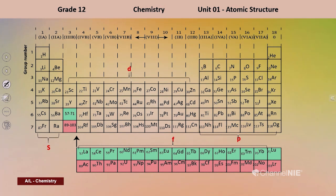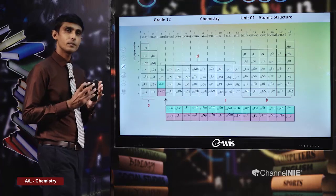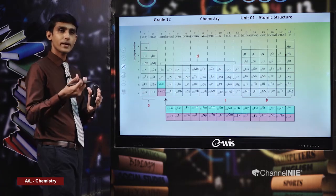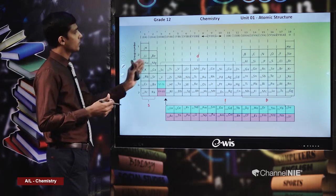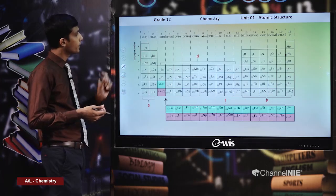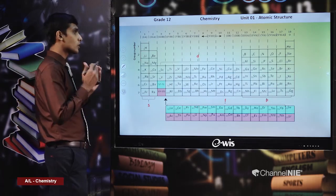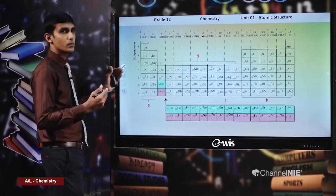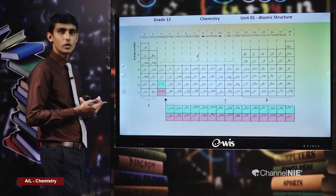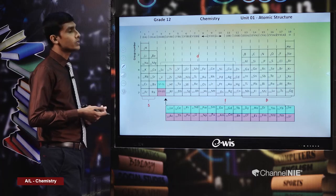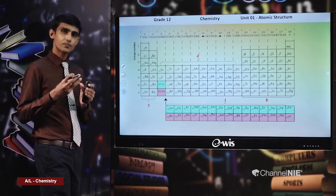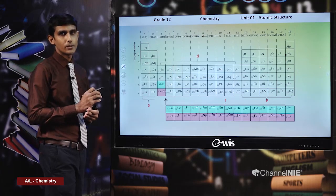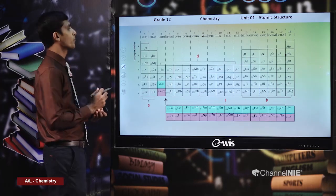In unit one, we mainly focus on S and P block elements, though in inorganic chemistry we discuss D block elements as well. If you look at the main group elements, across a period when you move from left to right and in a particular group when you move from top to bottom, you should know how these properties vary — all related to the electron configuration of the particular element.